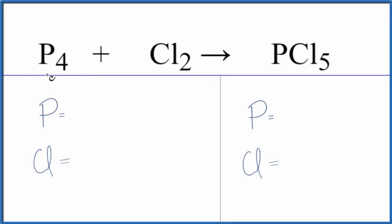In this video we'll balance the equation for P4 plus Cl2 yields PCl5. So let's count the atoms up and balance the equation.